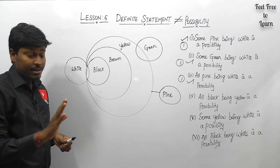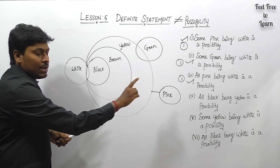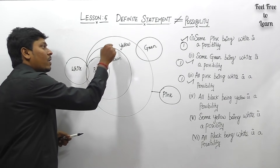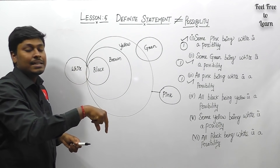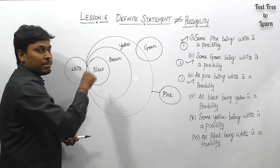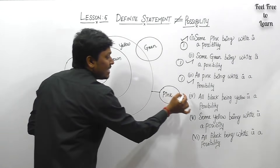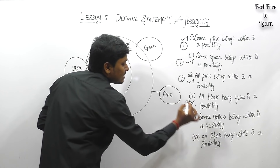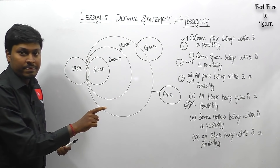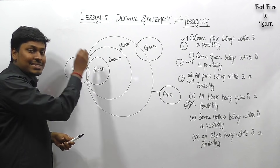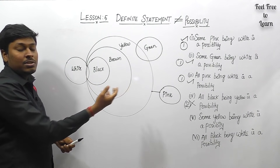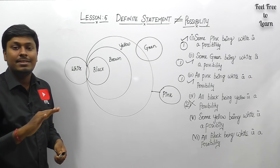Conclusion four: 'all black being yellow is a possibility.' After drawing the Venn diagram, all black are already yellow — just like the ball already being inside the cup. This is case number two — a definite statement. Asking it again as a possibility does not follow. The conclusion is false.